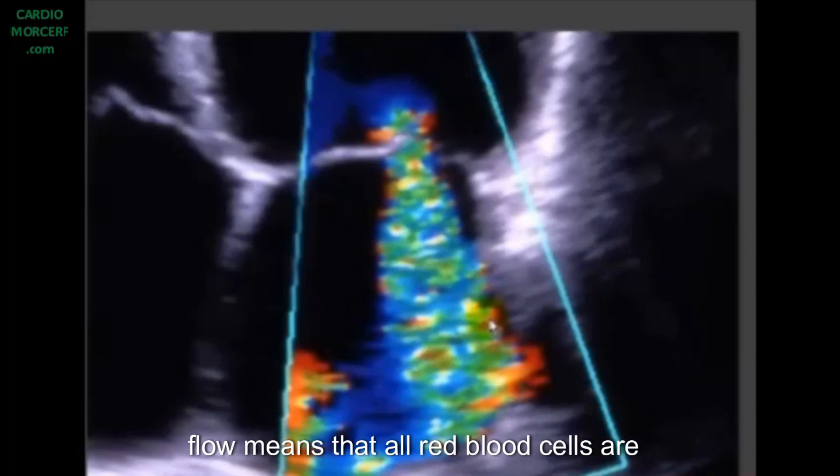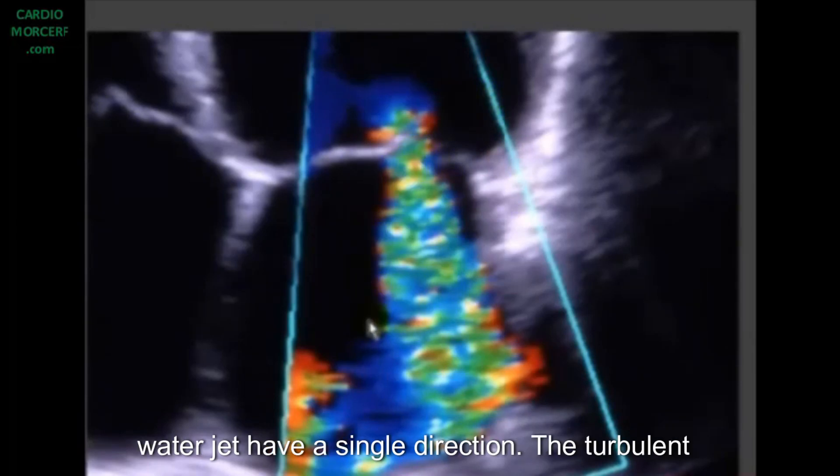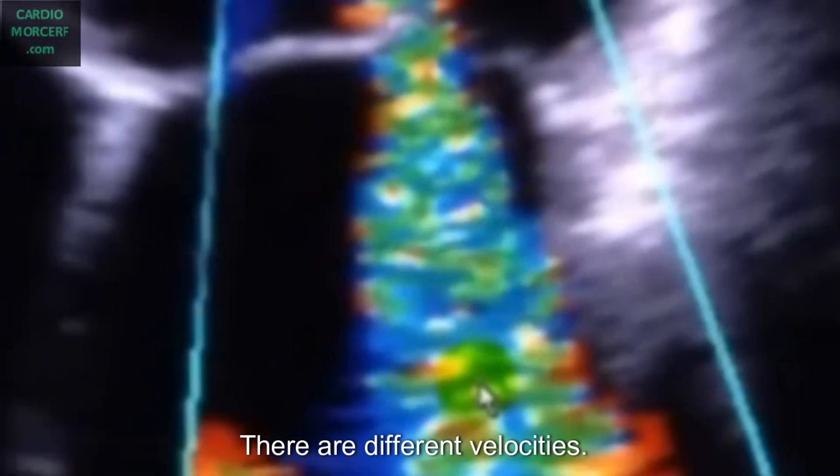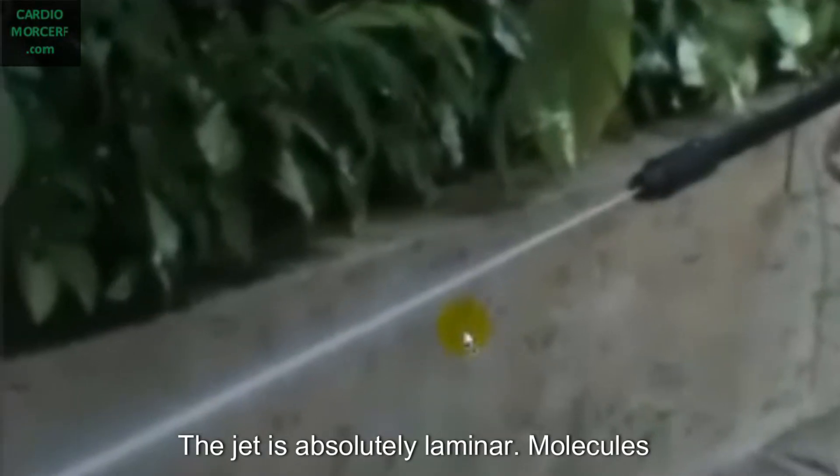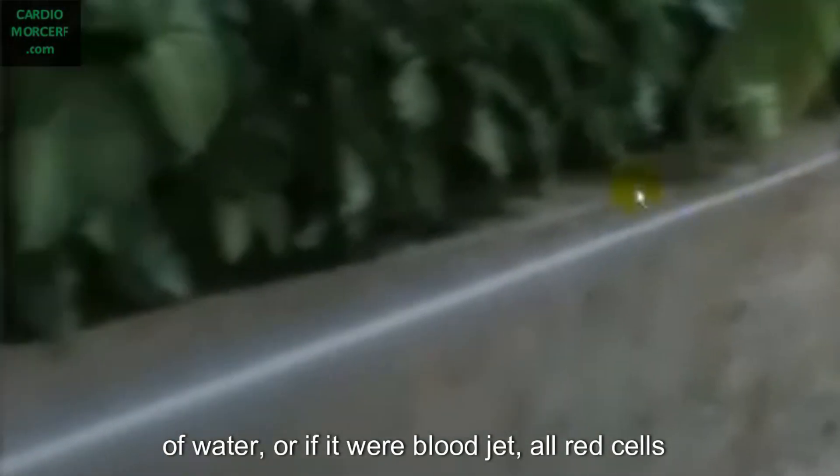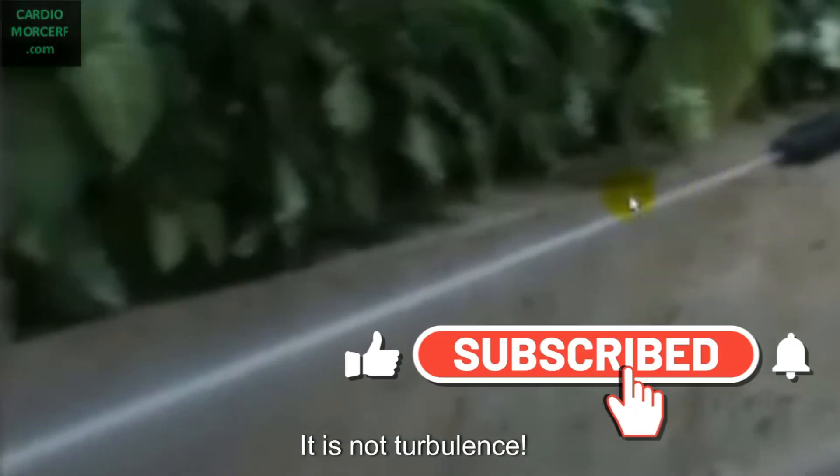A laminar flow means that all red blood cells are moving in one single direction. Just like in the jet of water, for sure, all molecules of water have a single direction. A turbulent flow would have molecules of water going in all directions, including contrary to the flow, with different velocities. The jet is absolutely laminar. All molecules of water, or if it were blood, all red cells would be moving in a single direction. It is not turbulent.